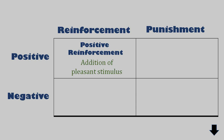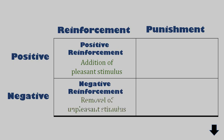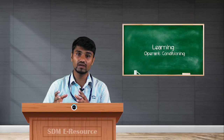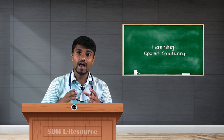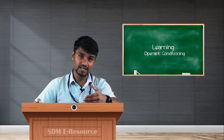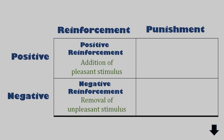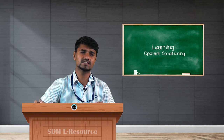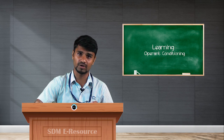Negative reinforcement happens when a desired behavior is achieved by removing an unpleasant stimulus. For example, if you are not studying properly, your father keeps nagging at you. If you want your father to stop nagging, you study properly. So the unpleasant stimulus — the nagging — is removed when the desired behavior is expressed.